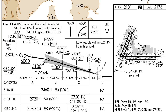On precision approaches, the approach angle is indicated along with the threshold crossing height. This information is also included on some non-precision approaches as well.